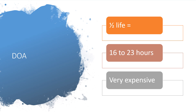The duration of action is essentially that the half-life is about 16 to 23 hours. Note that Rasburicase is very expensive.